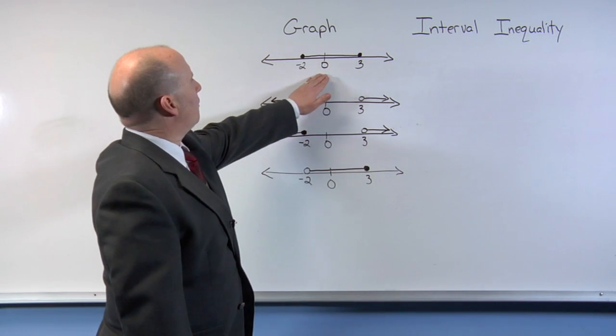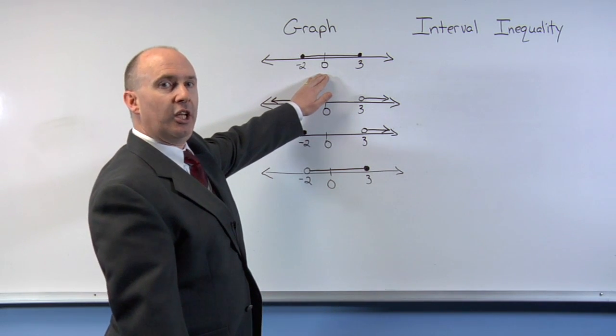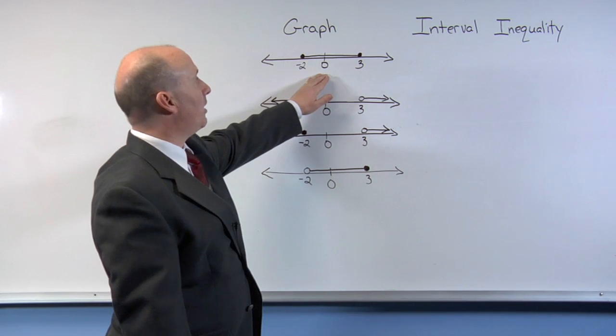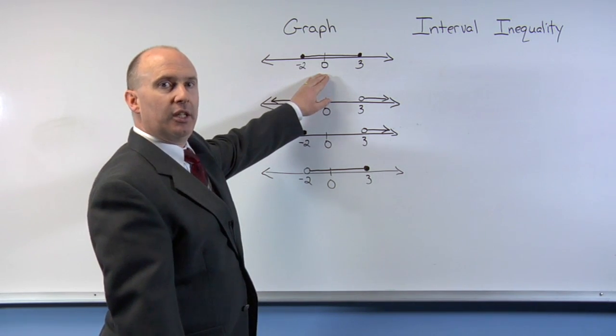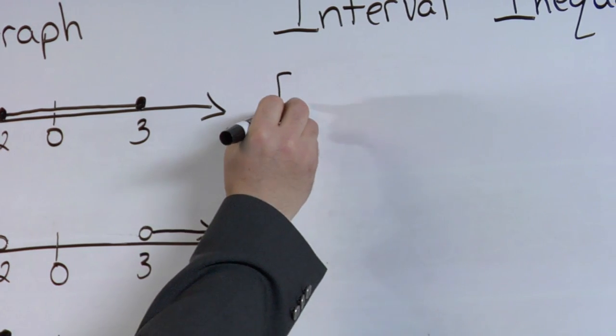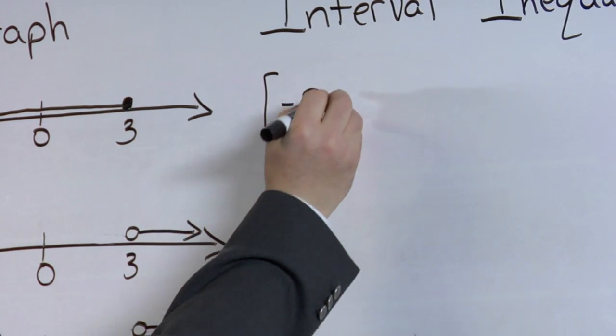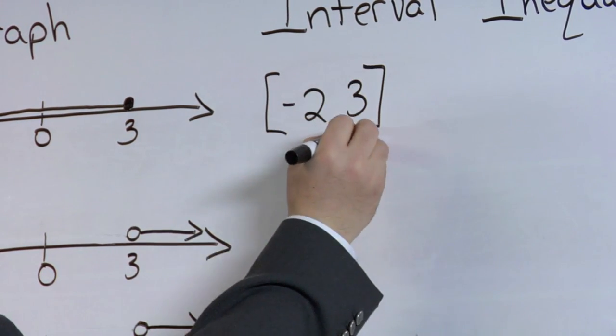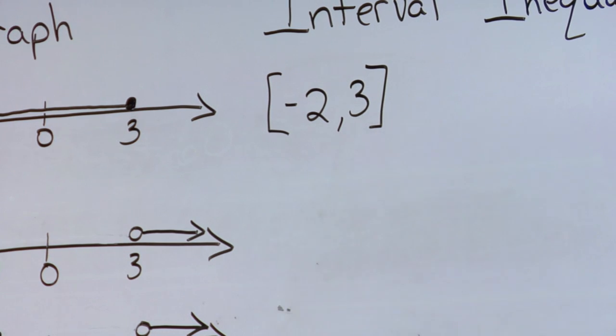The first inequality shows all points in between and including negative 2 and 3. In interval notation, we're going to use a square bracket to show that we include the endpoints.